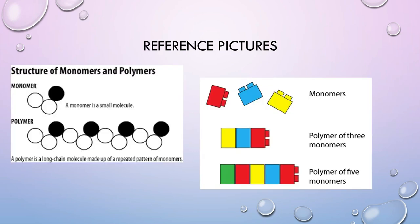Now let's look at some reference pictures which will benefit you in this very important topic. This is the structure of monomers and polymers. The small black outlined unit is a monomer — because a monomer is a small molecule. But with all these monomers, you can see such a big chain — that is a polymer. A polymer is a long chain molecule made up of a repeated pattern of monomers.